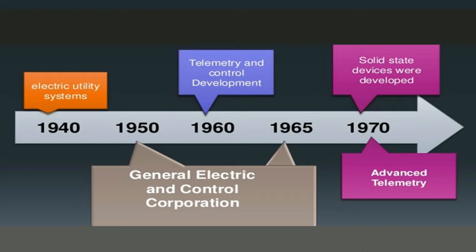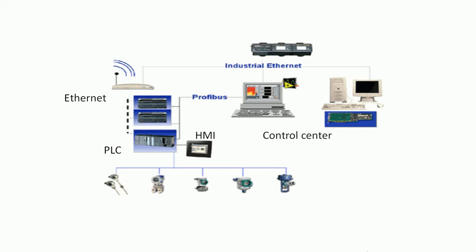Let's talk about SCADA architecture. SCADA is a control system architecture that uses computers, network data communications, and graphical user interfaces for high-level process supervisory management. But it also uses other peripheral devices such as programmable logic controllers and discrete PID controllers to interface to the process plant or machinery.